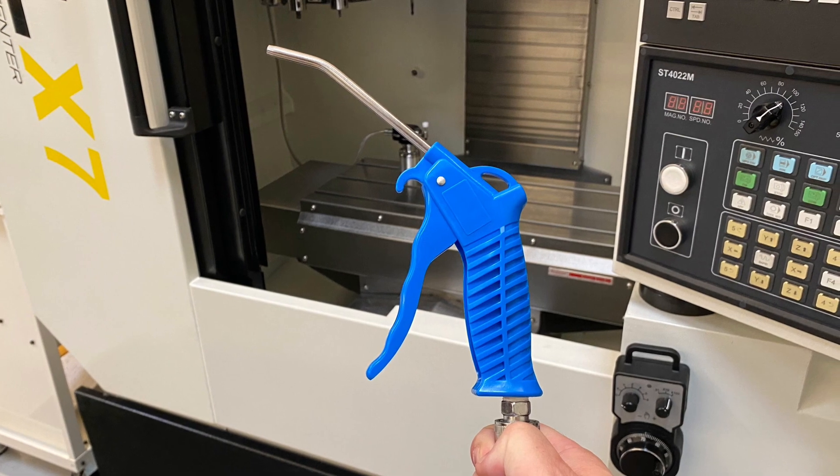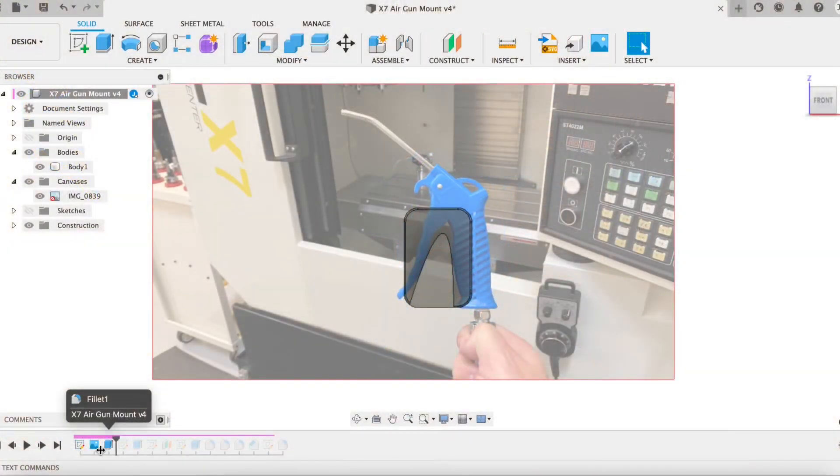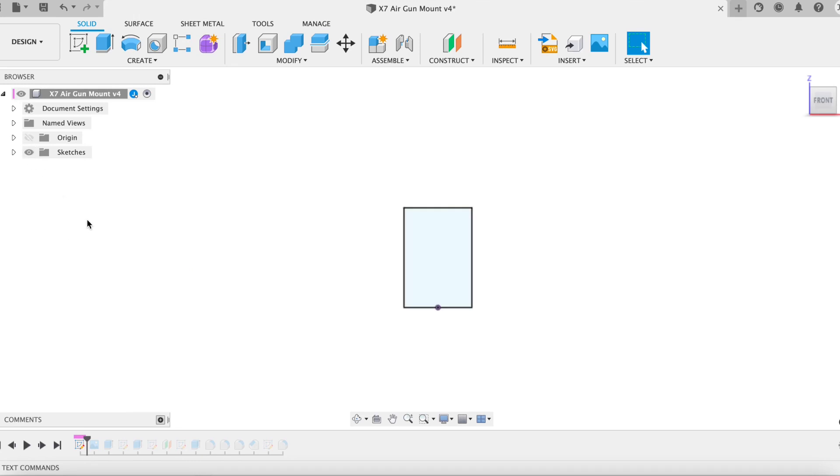And what I did is I dragged this into Fusion 360 so that I could, and I calibrated it, I scaled it. And then I just drew a quick image. I drew the square to create a little extrusion.